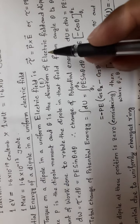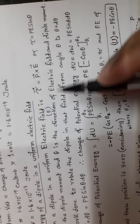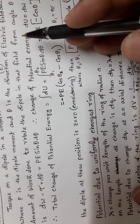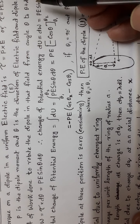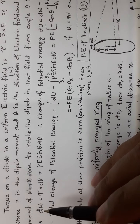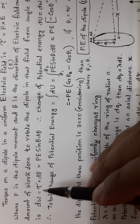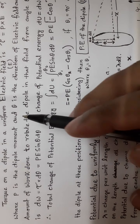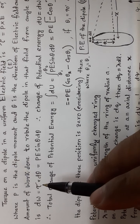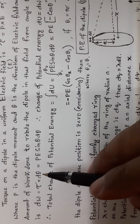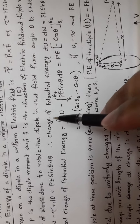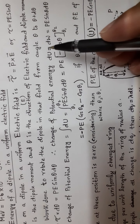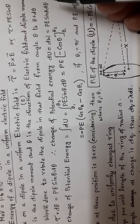The electric field gives the direction between the electric field and the dipole moment. The amount of work done to rotate the dipole in that field from theta to theta plus d theta is dW equal to tau into d theta, analogous to force into displacement in linear motion.